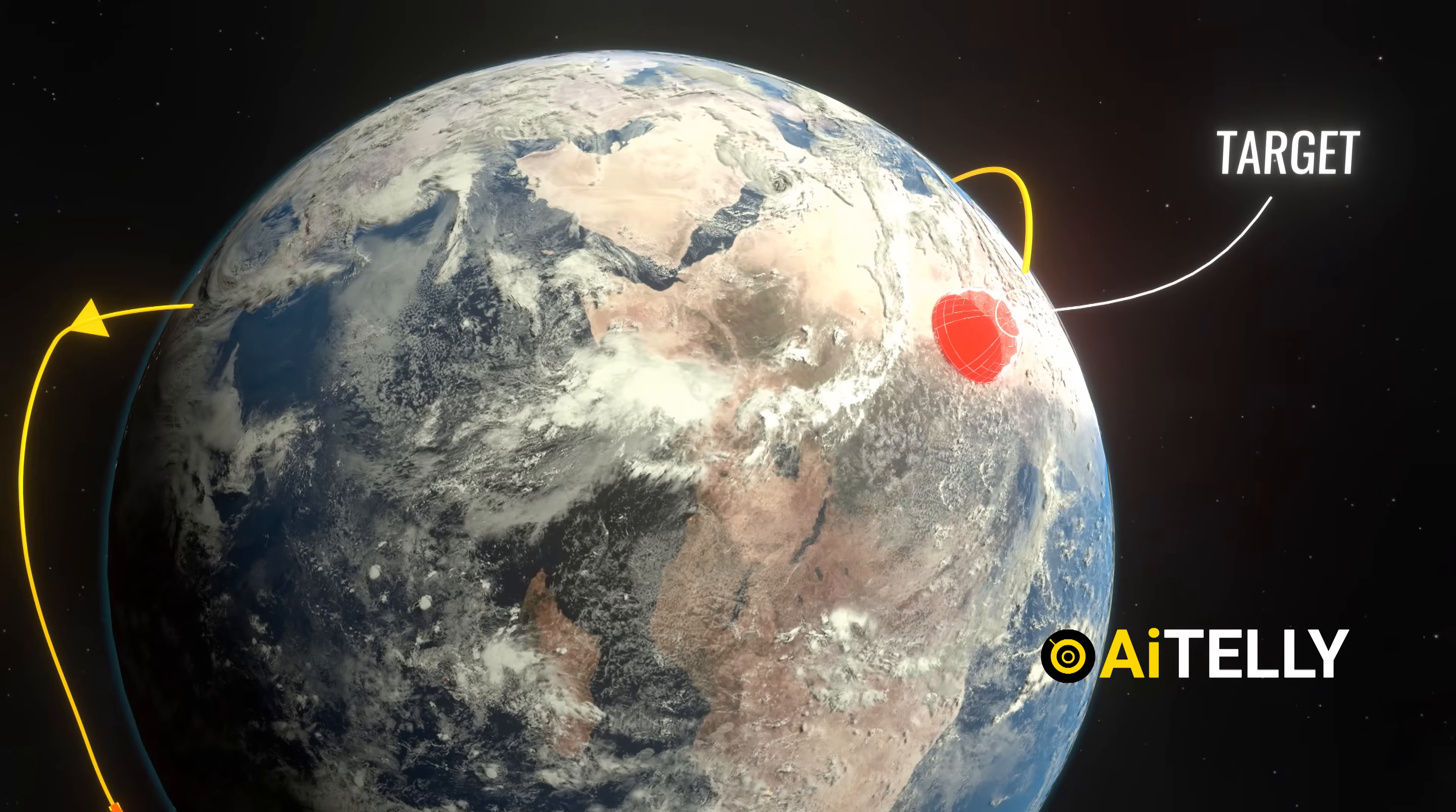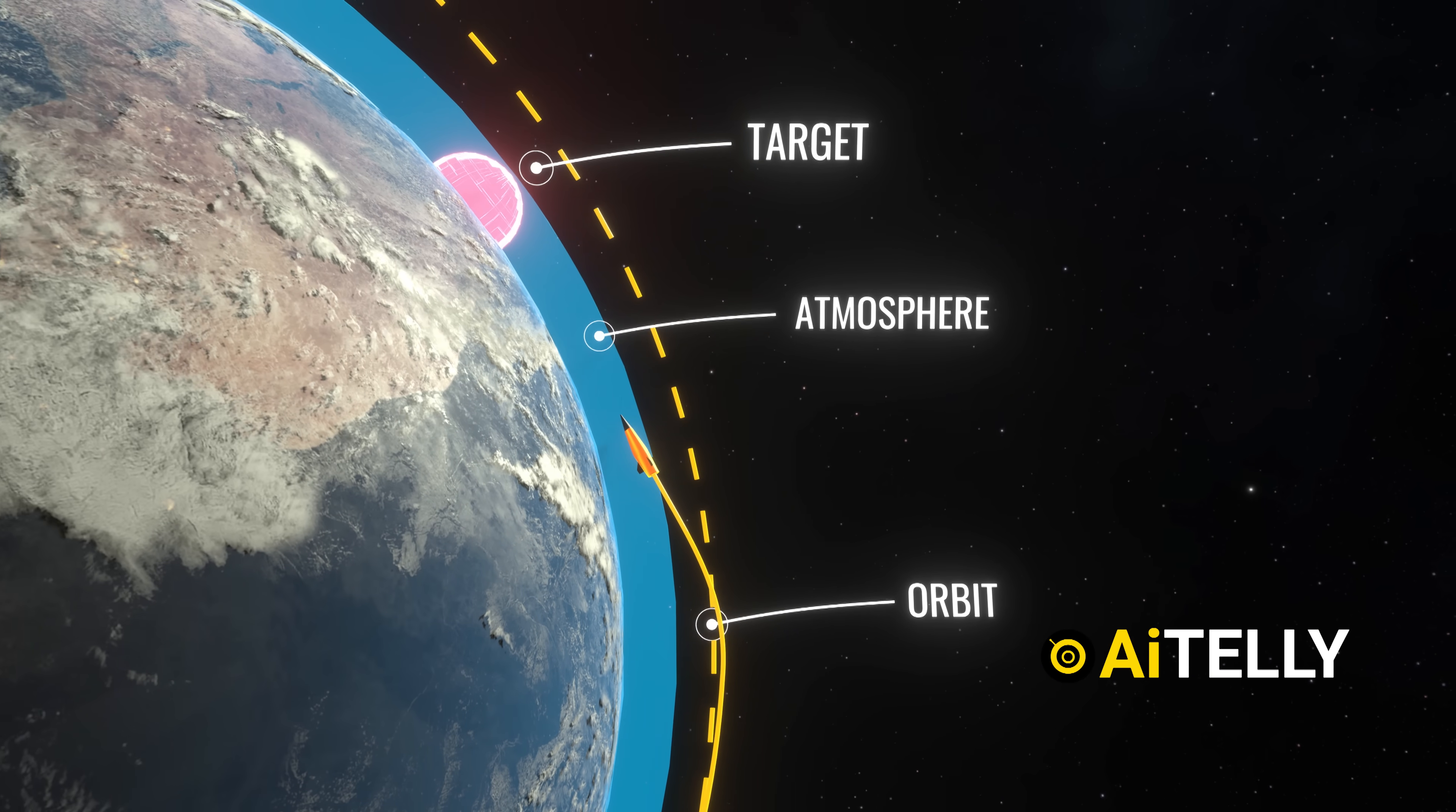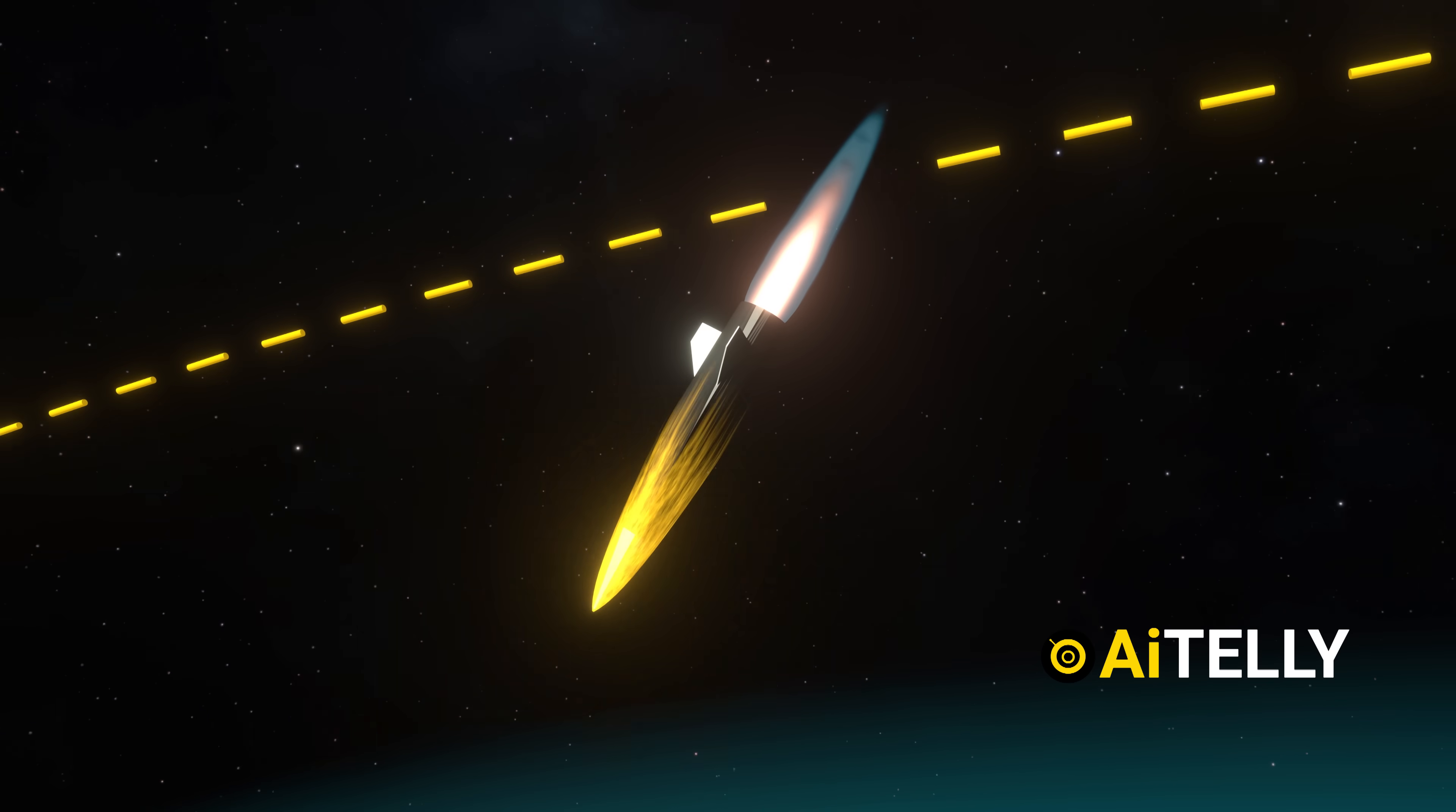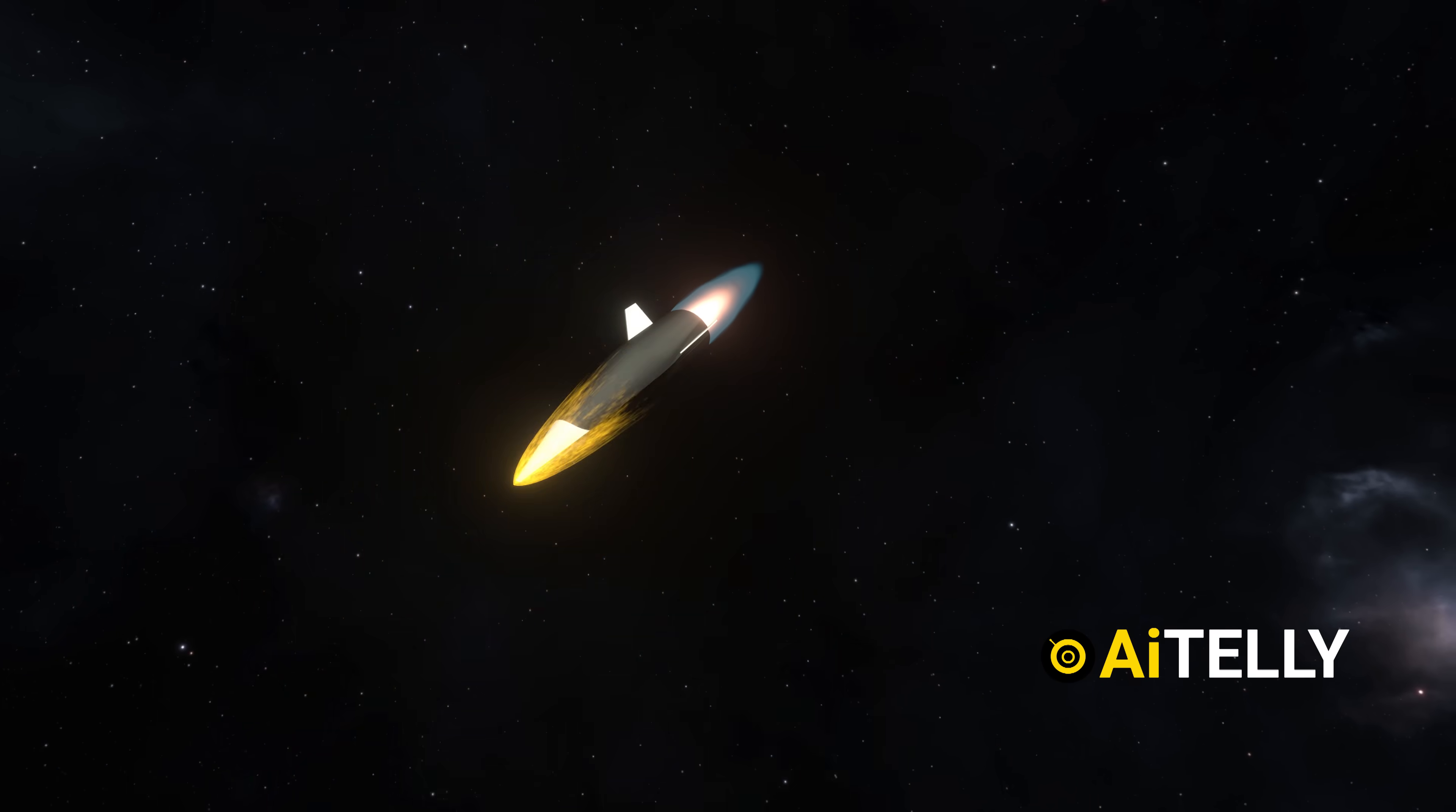This maneuverability allows it to approach its target from virtually any direction, including unexpected vectors such as over the South Pole areas less protected by traditional missile defenses. When the warhead arrives at the designated point in its orbit, it de-orbits and re-enters the Earth's atmosphere. At this stage, the warhead separates from any accompanying delivery vehicle and begins its final descent toward the target. In the terminal phase, the final moments before impact, the warhead moves at extremely high speeds, making it significantly more difficult for missile defense systems to intercept. Because the re-entry point is unpredictable and the velocity is so high, existing missile defense systems, which are designed for predictable ballistic trajectories, face a major challenge in countering this threat.